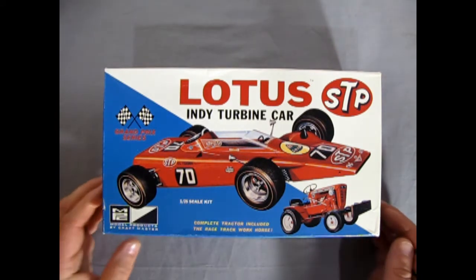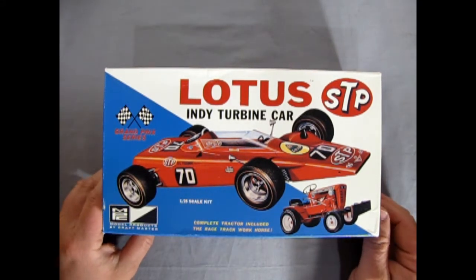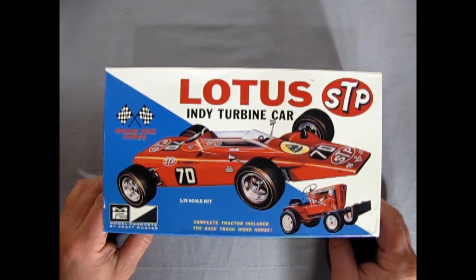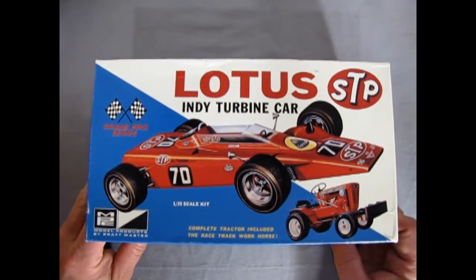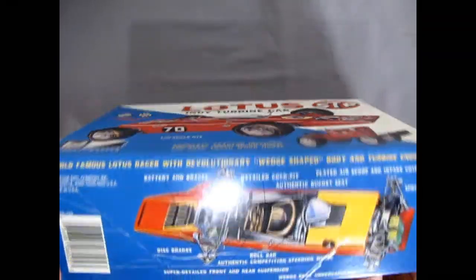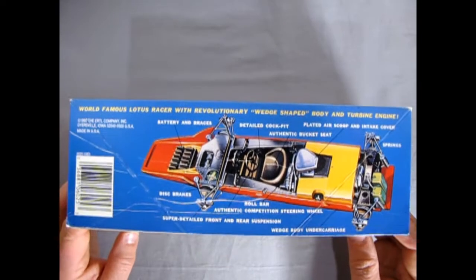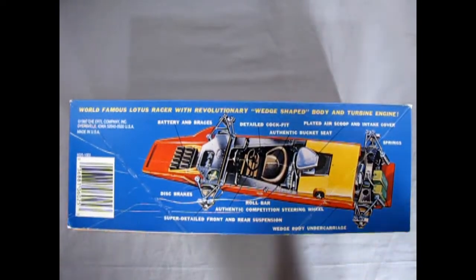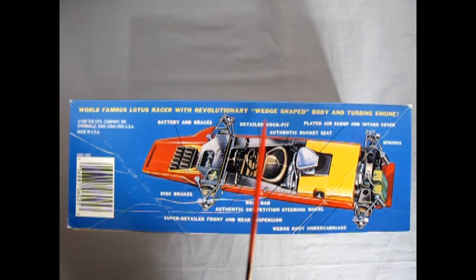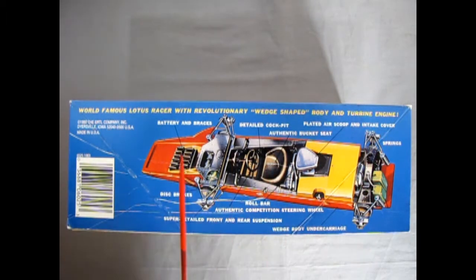So taking a look at this amazing box art. This, of course, is a reproduction from 1995 under the Ertl company. But you can see the excellent detail on this. Now as we turn the box on its side, you can see exactly all the amazing technological features of this model kit. The world-famous Lotus Racer with a revolutionary wedge-shaped body and turbine engine.